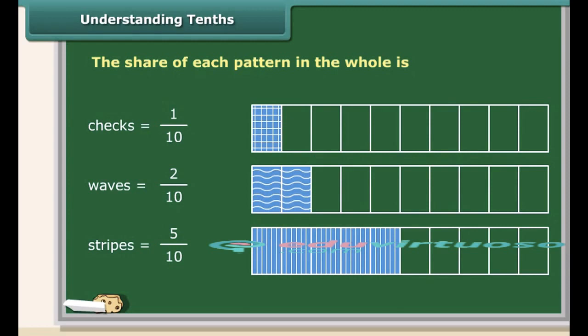Thus, while one part is 1 tenth, two parts show 2 tenths and five parts represent 5 tenths. 1 tenth can be written as 0.1 in decimal notation, 2 tenths as 0.2, and 5 tenths as 0.5.